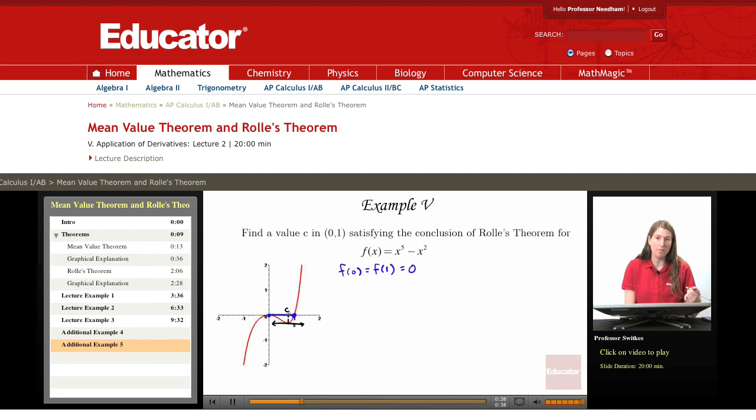You can see from the graph that we can do this, and our goal is to find that value c. Our goal is to find a value c in the open interval 0 to 1 such that f prime of c equals 0.